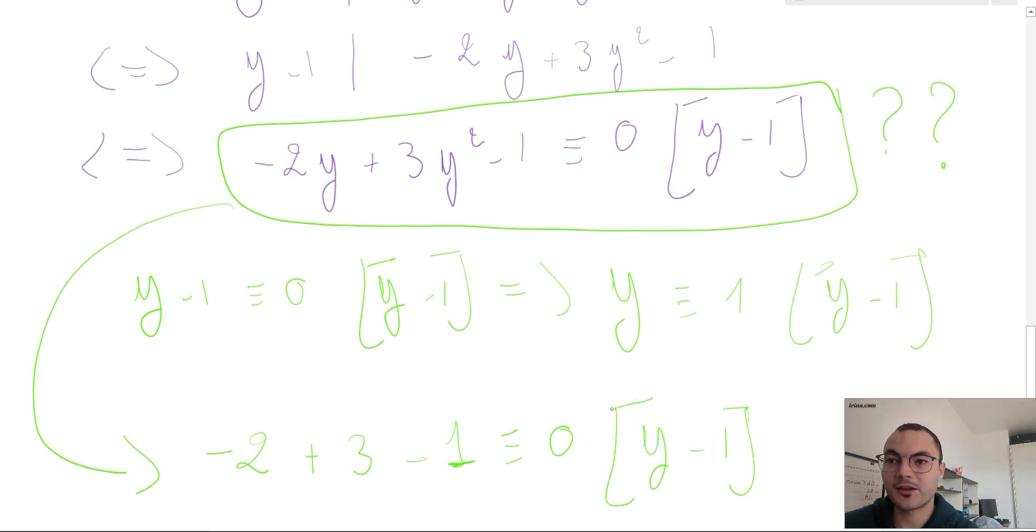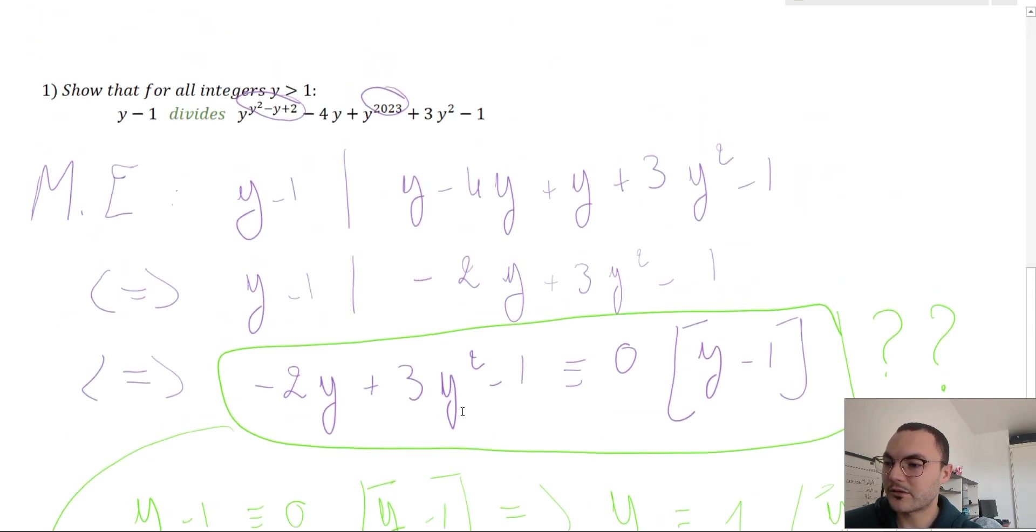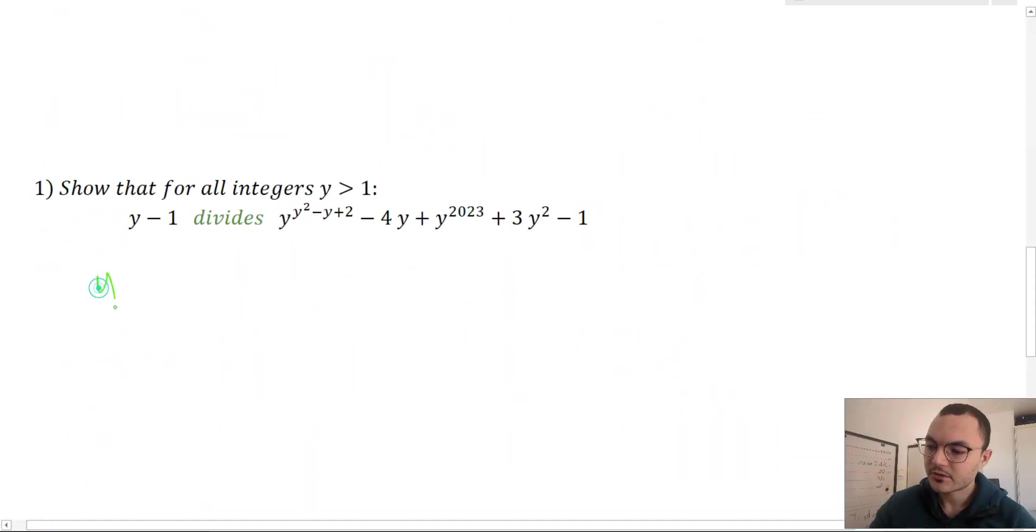Hence we have proven the property for the easier problem. Let's go back to the initial harder problem and try to apply the same idea. Since y is congruent to one mod y minus one...